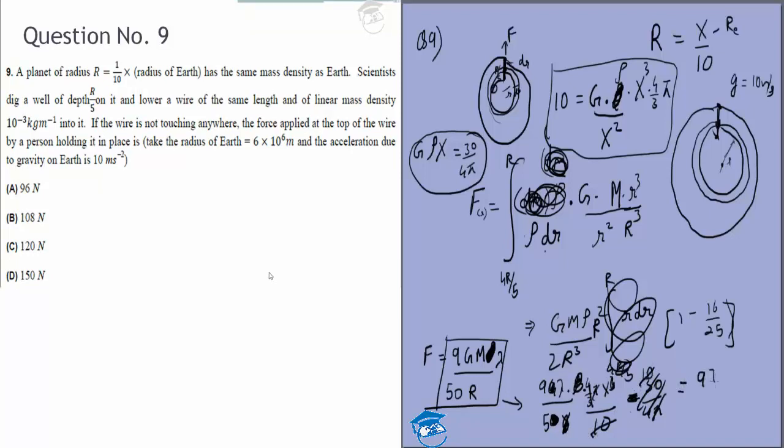That 10 cancels with this 10, and what we're left with is 9λ/5. Let me check - yes, m is 4π/3 times x³/10³, so this was 10³. One 10 is cancelled, we still have 100 left, so 9λ/500 times x.